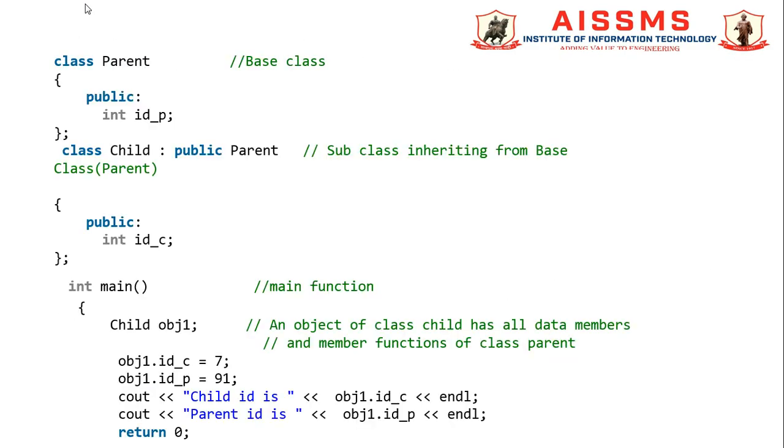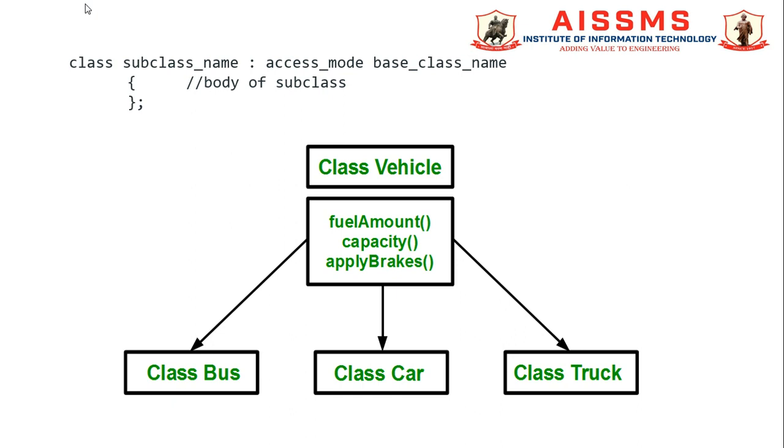As we know there is ambiguity between some of the inheritance types like multilevel, multiple, and single inheritance. Today we will discuss multiple inheritance. Why is it introduced? Because we can find some ambiguity and errors in single level inheritance. So multiple inheritance is introduced apart from single level inheritance.